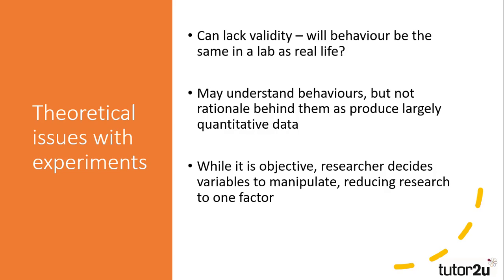A final theoretical issue is that of objectivity. Whilst on the surface the scientific nature of experiments can be seen as objective, there is a subjective decision by researchers as to which variables will be manipulated, and therefore the process cannot be seen as truly objective. In trying to prove a theory, researchers will have an inherent bias in their actions.